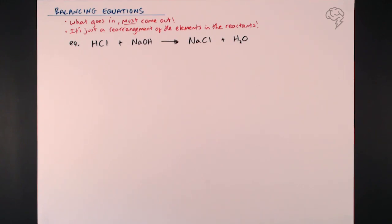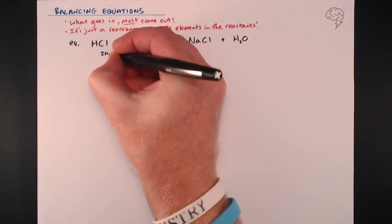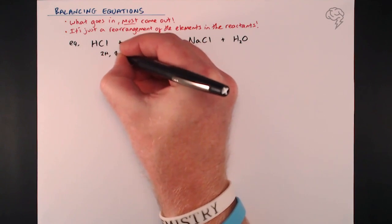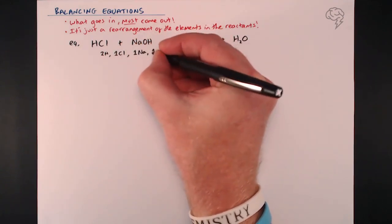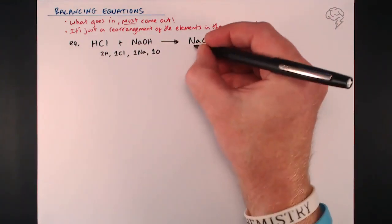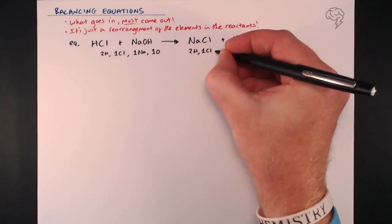The first thing to do is check what actual elements and atoms I've got in the reactants. Looking at the formulae, I've got two hydrogen atoms - one in the hydrochloric acid and one in the sodium hydroxide - I've got one chlorine, one sodium, and one oxygen.